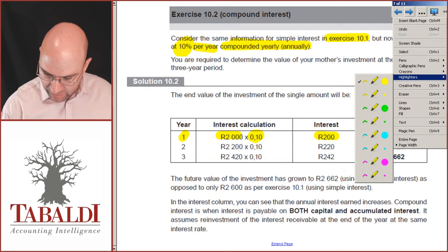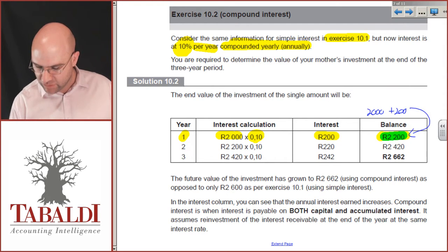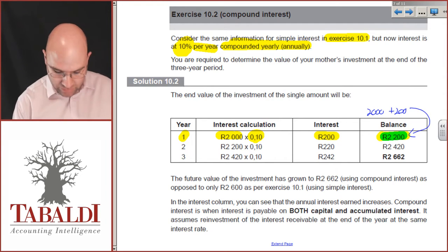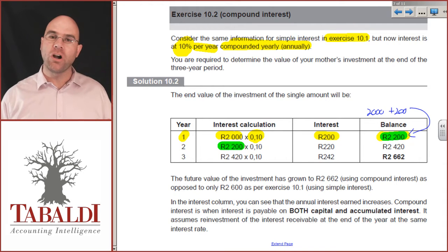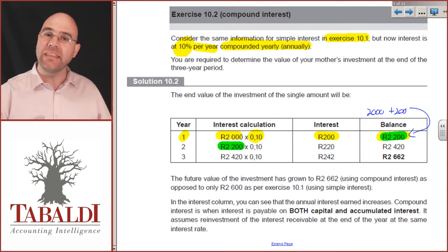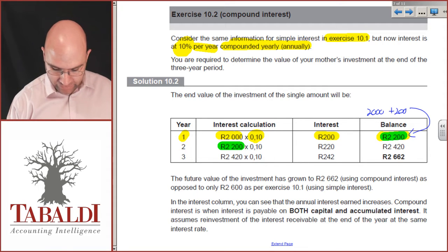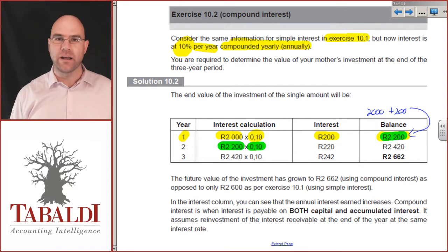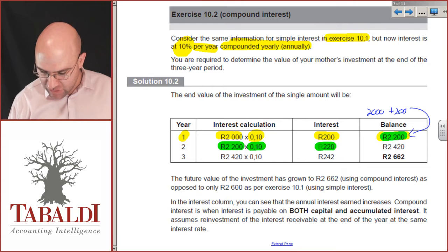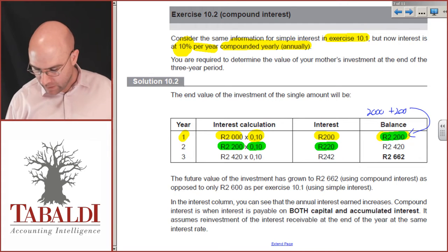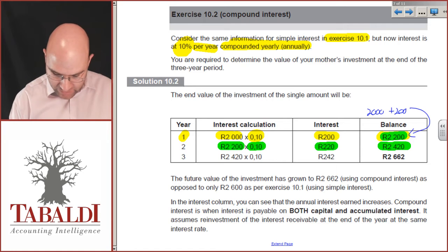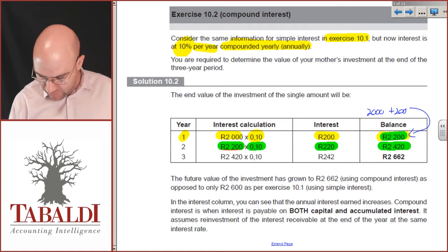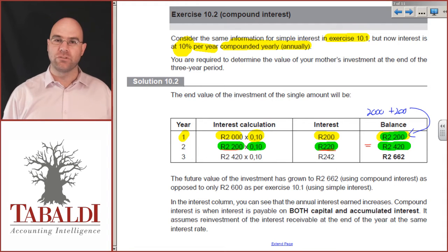Normally for simple interest you would go back and start with 2,000 times 10% for the next year. But it's different with compound interest. With compound interest, I'll take 2,200 and use that as my new principal amount. So I'm going to charge interest on the principal and the interest that's already been charged in the past. So 2,200 times 10% gives me interest of 220 this time, which leaves me with a closing balance of 2,420.